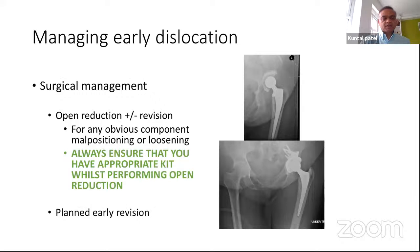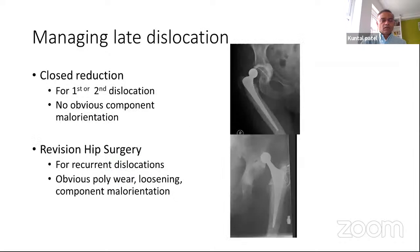For early revision surgery: if there is component dissociation — such as a cup that has dislodged 10 days post-op as seen on x-ray — you have to revise the cup. For late dislocation, the mainstream treatment is revision hip surgery. Closed reduction has a role for first or second dislocation where components remain well fixed and well orientated. For recurrent late dislocation, common causes are poly wear, loosening, or component malrotation, and revision hip surgery plays an important role.